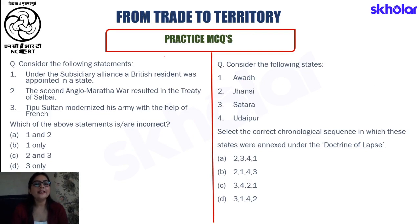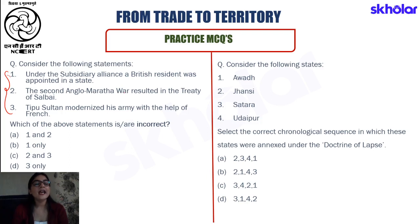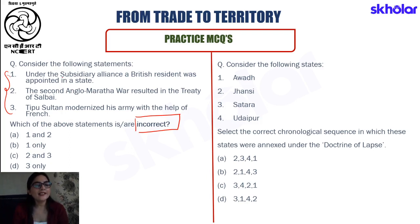Now we are going to attempt practice MCQs on what we have learned from this chapter. The first question presents three important statements and we need to identify which among them are incorrect. The first statement says that under the Subsidiary Alliance, a British resident was stationed in any particular state.